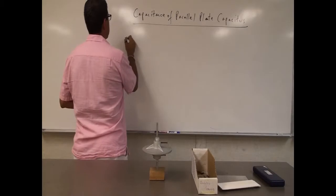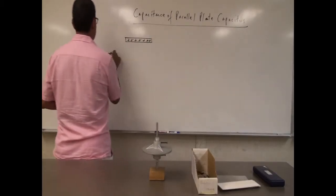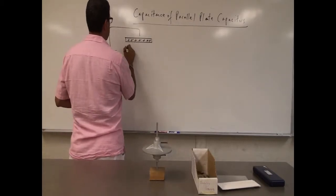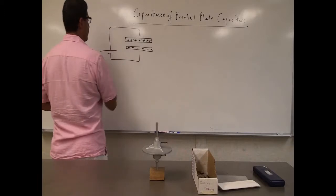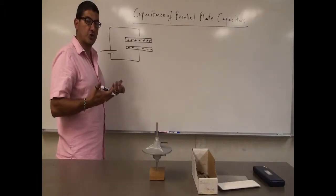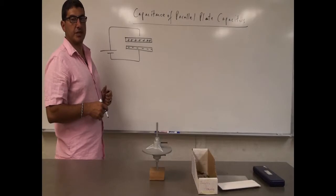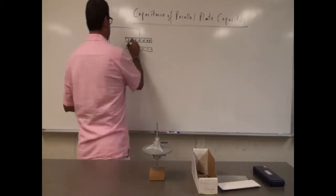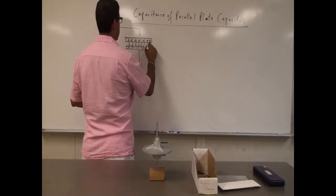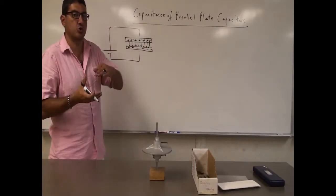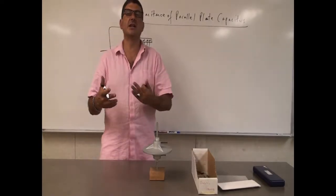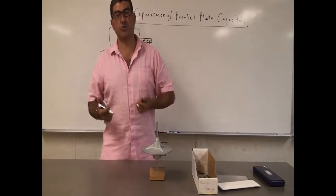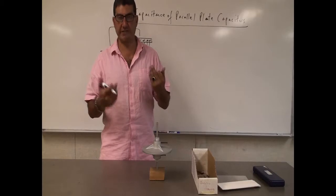This is called a parallel plate capacitor. The positive plate is connected to the positive terminal of a battery, and the other plate has a negative charge connected to the negative of the battery. By storing charge on those plates, the plates create an electric field. They store energy in those electric field lines, so a capacitor behaves like a temporary battery — an energy storage device.